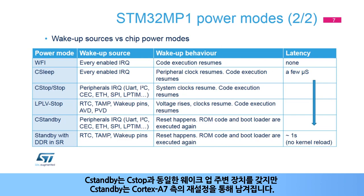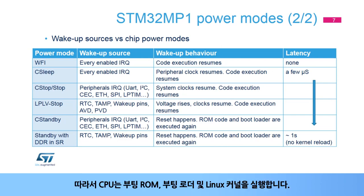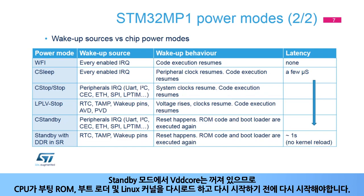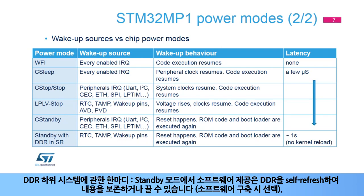C-Standby has the same wake-up peripherals as C-Stop, but C-Standby is left through a reset on the Cortex-A7 side, so the CPU executes the boot ROM, the bootloader, and then the Linux kernel. In Standby mode, VDD-Core was off, so it needs to restart before the CPU executes the boot ROM, the bootloader, and possibly the Linux kernel reload and restart.